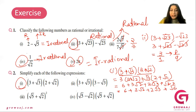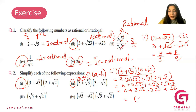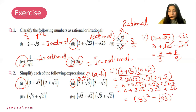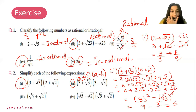Similarly, question number 2 is in the form A plus B into A minus B, which equals A squared minus B squared. So this will be 9 minus 3, which is equal to 6. The answer is 6.